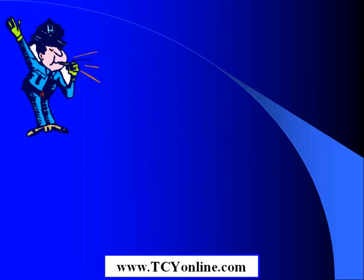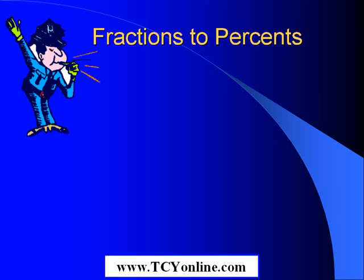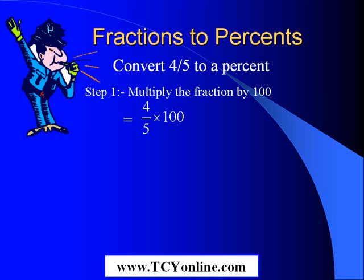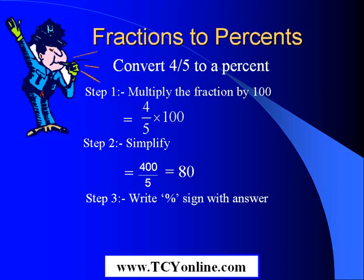Let us now analyze how to convert fractions to percents by taking an example. We need to convert four by five to a percent. We would follow a step-by-step approach. Step one would be to multiply the fraction by hundred, as shown. Then we would simplify the so obtained fraction. In this case, four hundred divided by five would lead to eighty. And finally, we would assign a percentage sign to it.